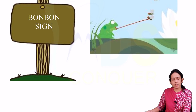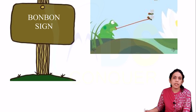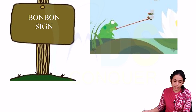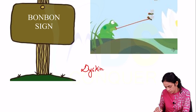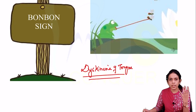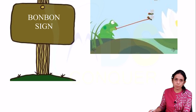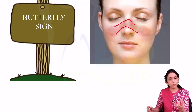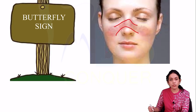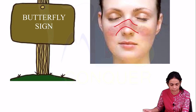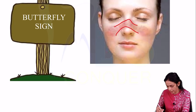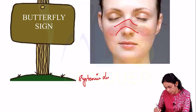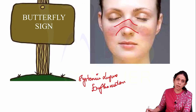Next is the Bonbon sign, where when the patient protrudes their tongue there is bulging of the cheeks, seen with dyskinesia of the tongue. Next is the Butterfly sign — a classic butterfly-shaped rash spreading over the malar area and the bridge of the nose, sparing the nasolabial fold, seen with systemic lupus erythematosus.